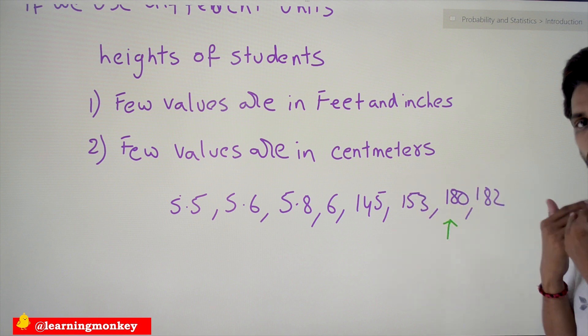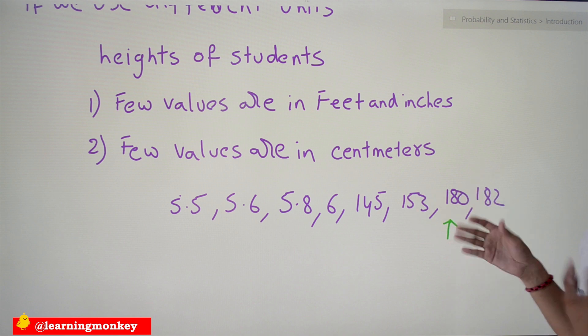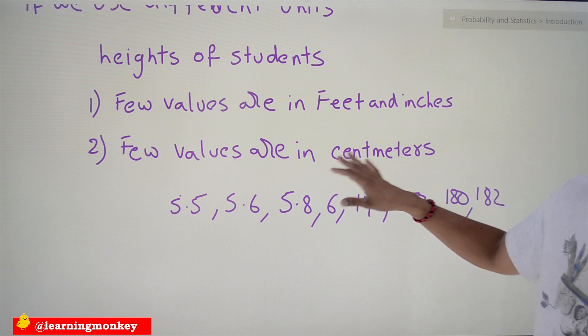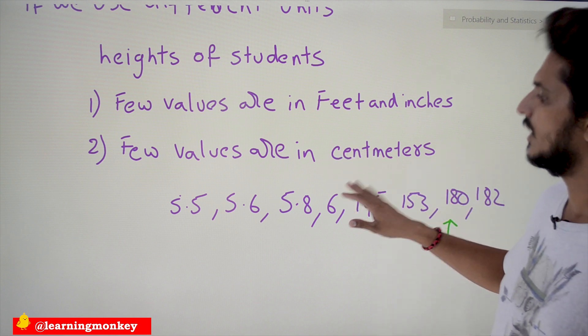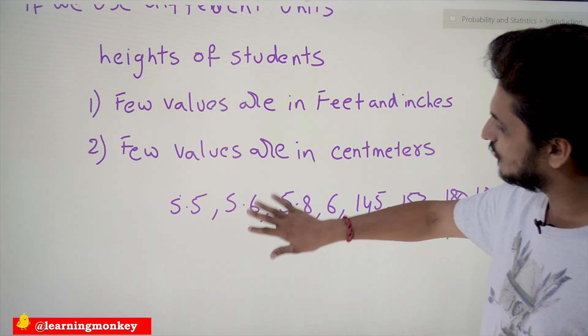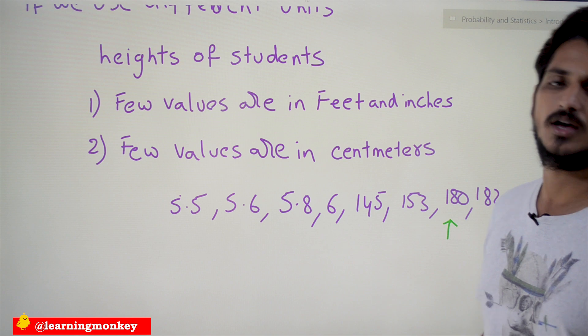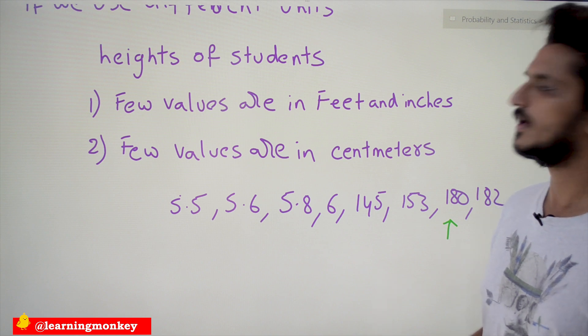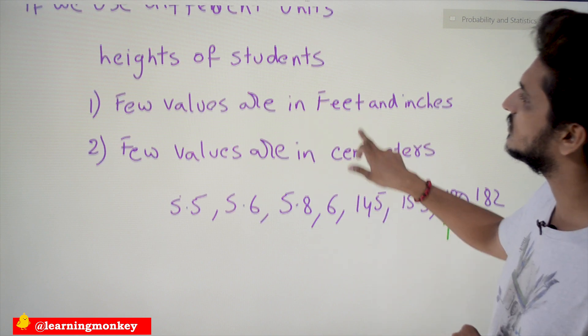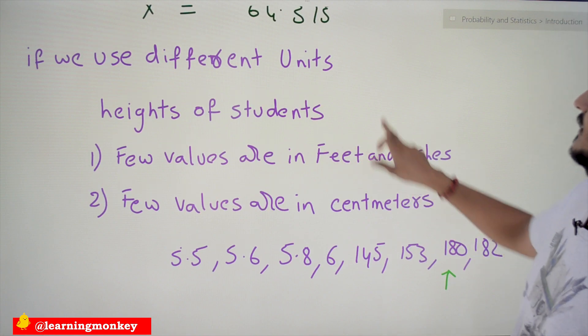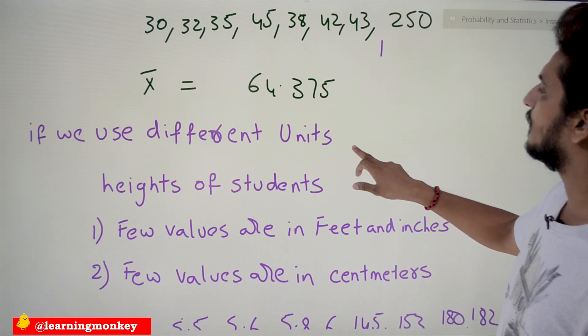That's why in this type of situation we are not supposed to use arithmetic mean. You have to convert this in feet into the centimeters, or convert this into the inches, then we have to apply arithmetic mean. For different units, we are not supposed to apply arithmetic mean.